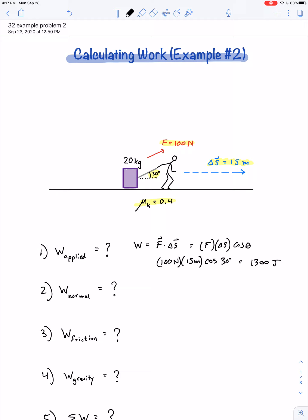The amount of work done by the normal force is also the magnitude of the normal force multiplied by the magnitude of the displacement times the cosine of the angle between those vectors, but that's 90 degrees, and that gives us 0 joules.